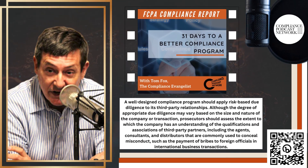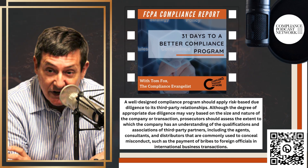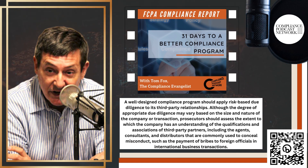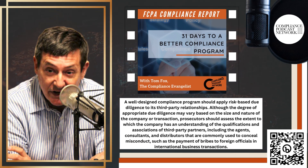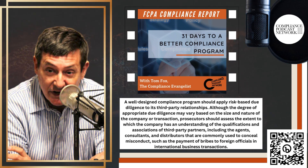Getting your arms around due diligence can sometimes seem bewildering for the compliance practitioner. The purpose is to encourage businesses to put in place due diligence procedures that adequately inform the application of proportioned measures designed to prevent persons associated with a company from engaging in bribery and corruption on the company's behalf. This means that due diligence procedures act as both a procedure for anti-bribery risk assessment and as a risk mitigation control going forward.